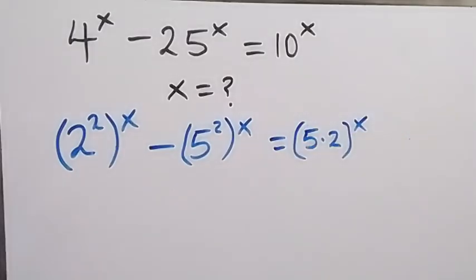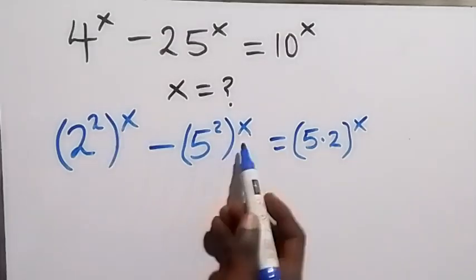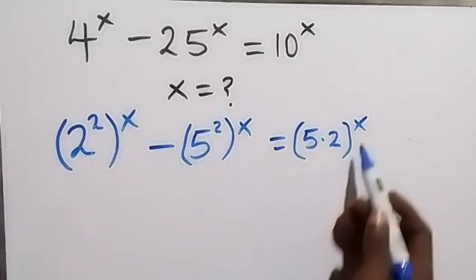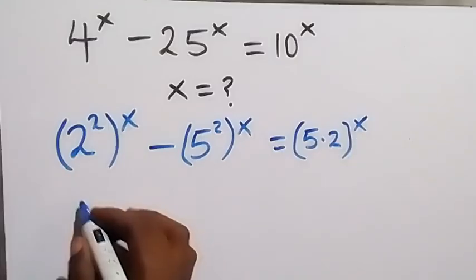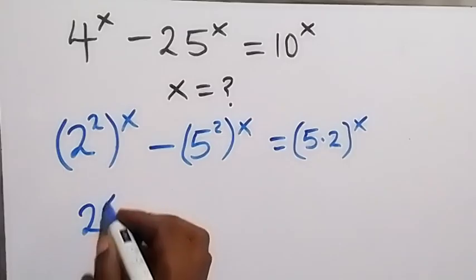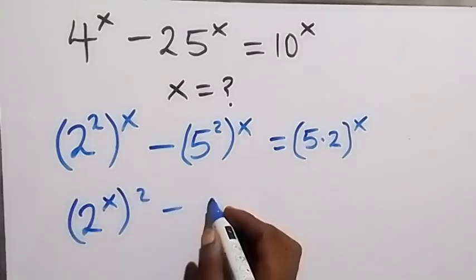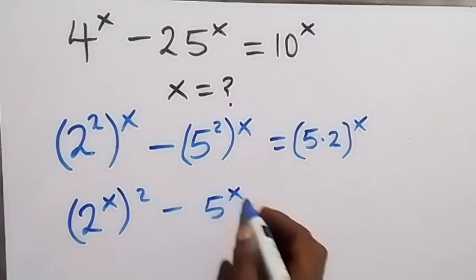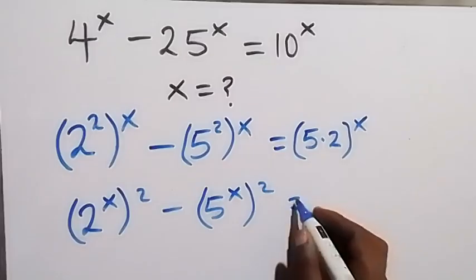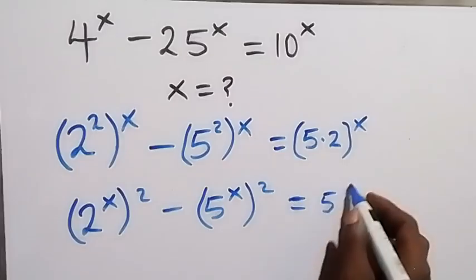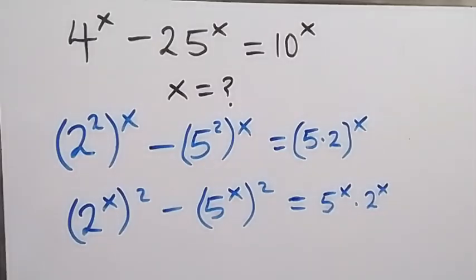In the next step, we apply the law of indices. We interchange this power from here, so the power of x affects these two numbers. This becomes 2 raised to power x, then raised to power 2, minus 5 raised to power x, then raised to power 2, equals 5 raised to power x times 2 raised to power x.